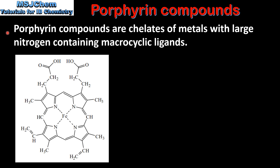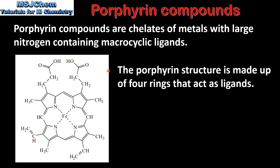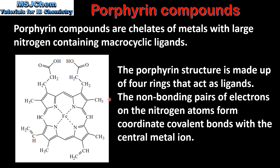Porphyrin compounds are chelates of metals with large nitrogen-containing macrocyclic ligands. The porphyrin structure is made up of four rings that act as ligands. Here we have the structure of heme, and as you can see the porphyrin structure is made up of four rings that act as ligands. The non-bonding pairs of electrons on the nitrogen atoms form coordinate covalent bonds with the central metal ion.